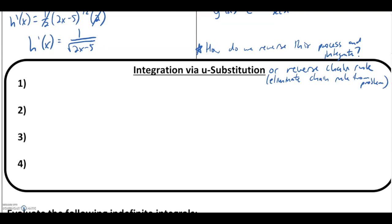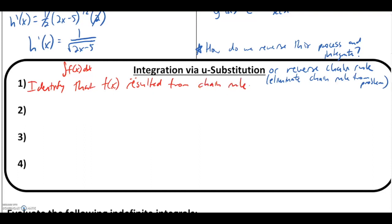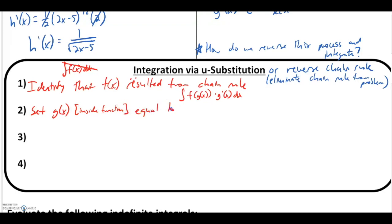Step one — and this is the key — when integrating a function of x that requires this new process, identify that f of x resulted from applying the chain rule. What we're really looking for is a composite function being multiplied with its derivative. Step two: set the inside function equal to a new variable u, changing our problem from a complicated function of x to a simpler function of u.